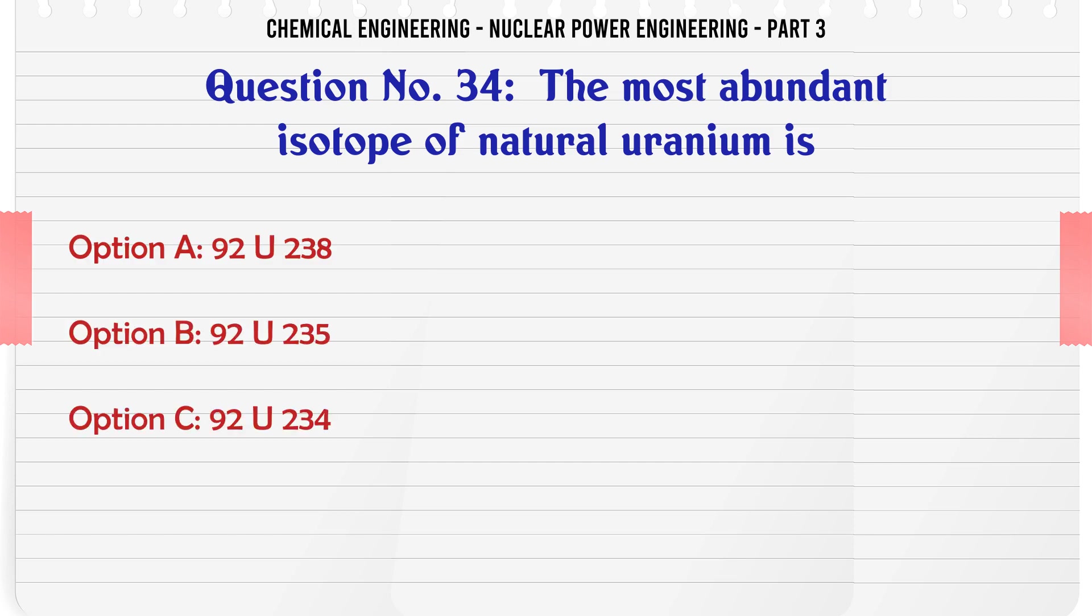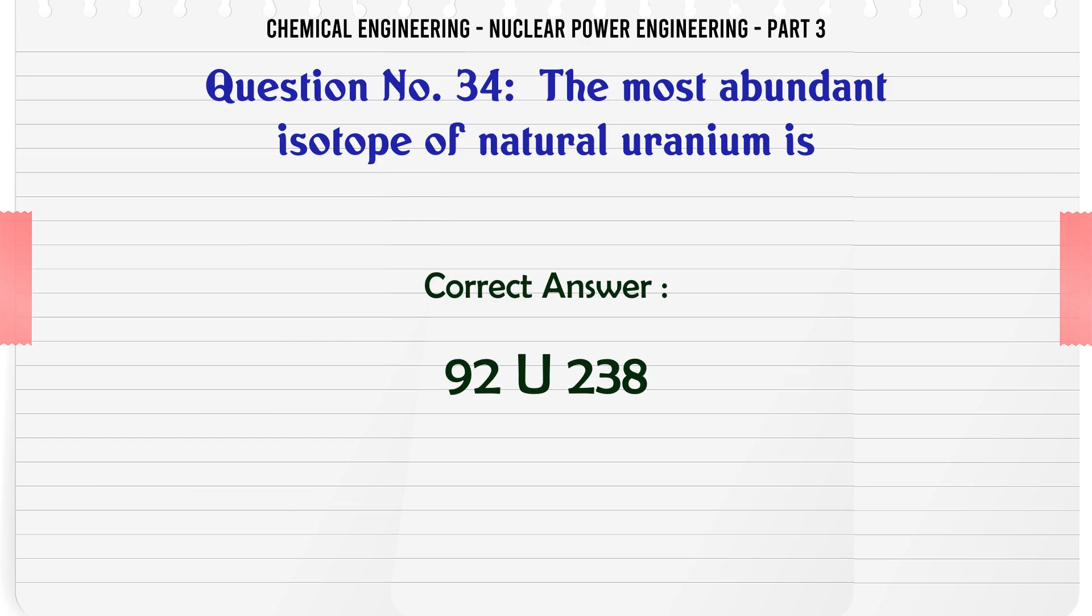The most abundant isotope of natural uranium is 92U-238. The correct answer is 92U-238.